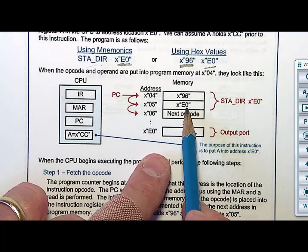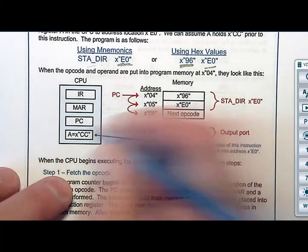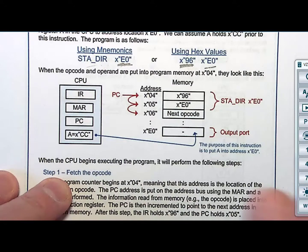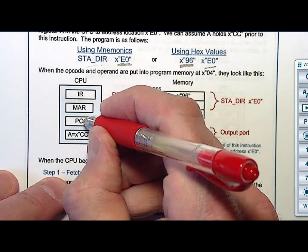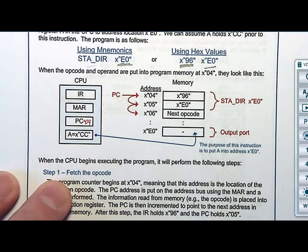The prior, prior instruction left the program counter in a perfect state by design. Program counter is pointing to 04. That's from the prior instruction. Thank you, prior instruction. What do I need to do first?